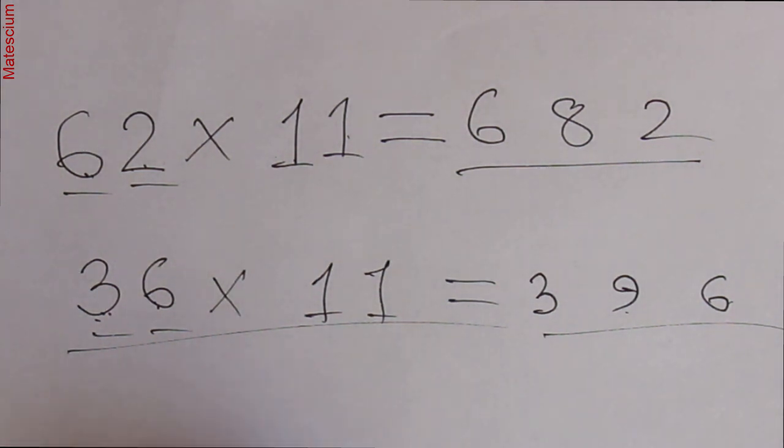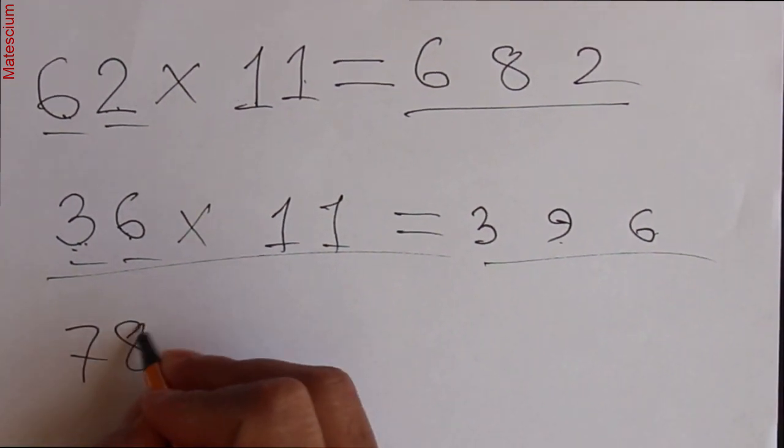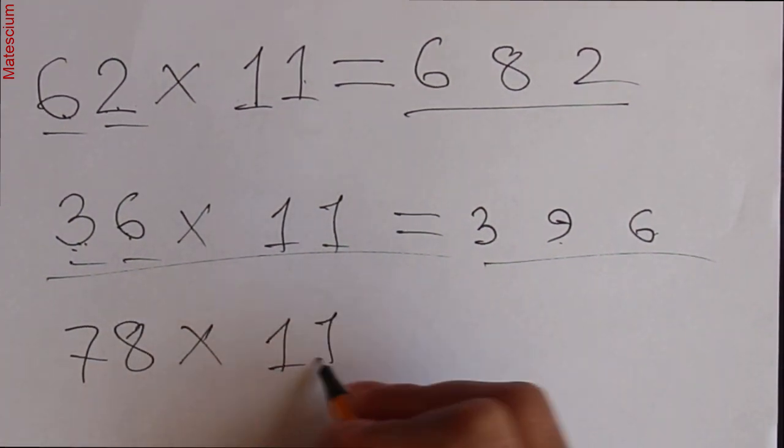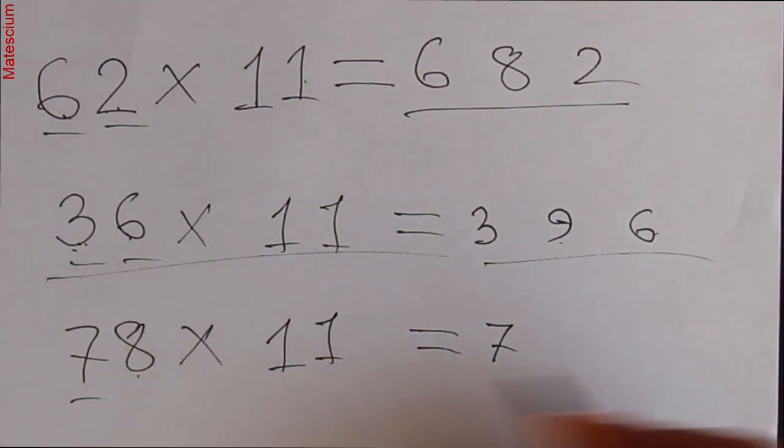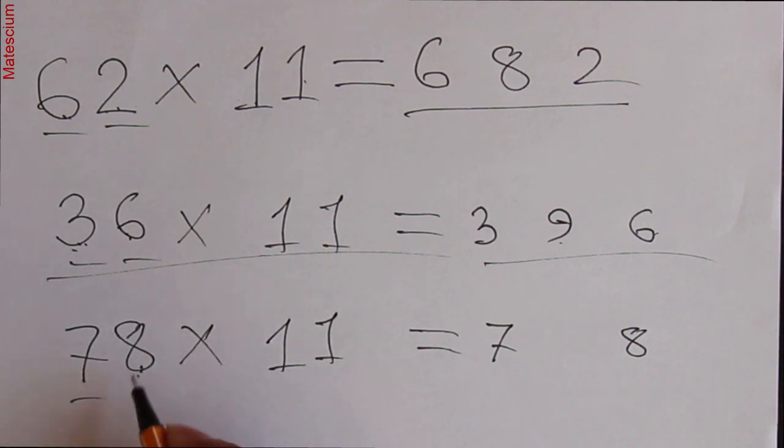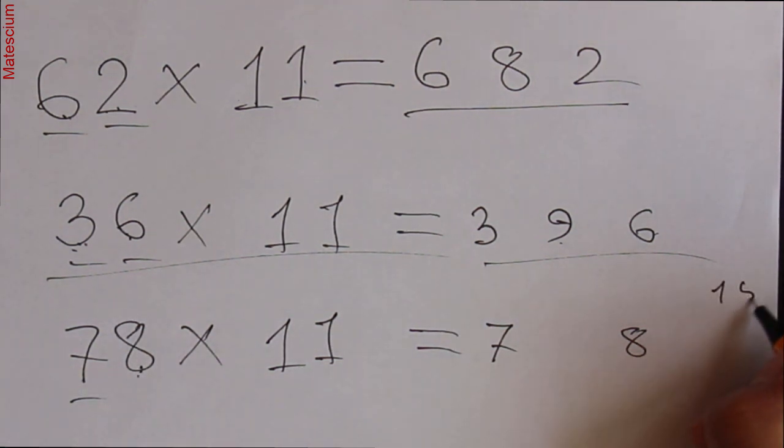Let's solve another example: 78 times 11. Write the 7 on one side and the 8 on the other side. Then add 7 plus 8. 7 plus 8 is 15.